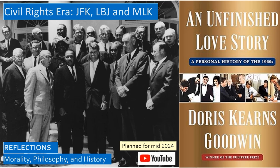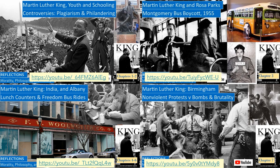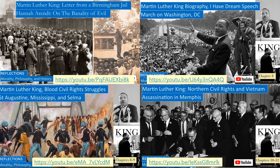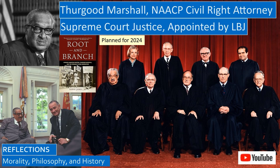Doris Kearns Goodwin will release 'An Unfinished Love Story' in April 2024, on her and her late husband's experiences during the pivotal decade of the 1960s. Martin Luther King was the first celebrity civil rights leader — he was a great orator, and the civil rights protests were great television. The brutal violence they faced in the Deep South helped shift public opinion to reverse the Jim Crow legal system upholding segregation, discrimination, and denying blacks the right to vote. Kearns' biography emphasizes how Martin Luther King and Lyndon Johnson were partners in passing civil rights legislation. What enabled Martin Luther King to successfully protest for civil rights was the Supreme Court decision, which was actually a culmination of a decades-long legal battle by Thurgood Marshall and other NAACP lawyers. LBJ appointed Thurgood Marshall to an open seat on the U.S. Supreme Court.